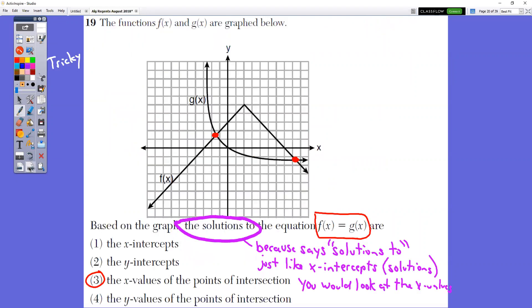In question number 19, this one's a little bit tricky as well, just because of how it's worded. Based on the graph, the solutions to the equation f of x equals g of x are which ones? Notice that you have this absolute value graph in this exponential graph and they cross right here and they cross right here. So there's two solutions based on the graph, the solutions, just because it says solutions to, it's just like having the x-intercepts. Remember x-intercepts are solutions. So where is this at the x value? Where is this at the x value? That's what they really want to know, which is choice three. That one's a hard one.